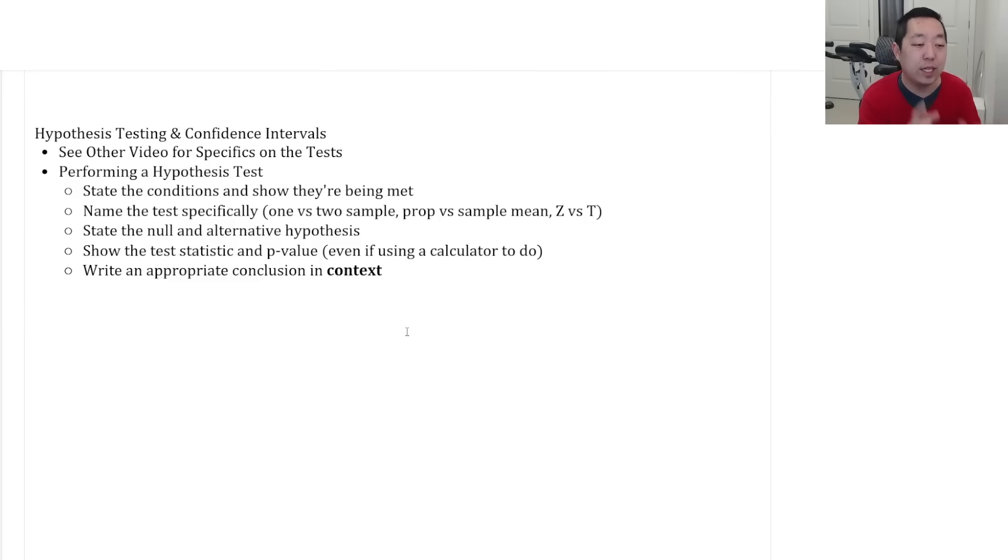For a confidence interval, it's basically identical, except that rather than showing the p-value, you're going to show what the confidence interval is, and then write an appropriate conclusion for that. Like I said, I'll put a link in the description below to that other video on hypothesis testings, because that one's a little bit longer to understand if you're having trouble identifying it. So those are the main ideas on the FRQs and the topics that you should look at. Obviously, it's not exhaustive, but hopefully it gives you a pretty good idea of the things that you should be doing.